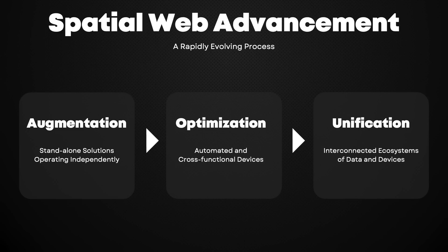A world in which significant time-saving tools are at your disposal is not as far off as it may seem. The process by which we will achieve a mature spatial web can be broken down into just three phases: Augmentation, Optimization, and Unification.